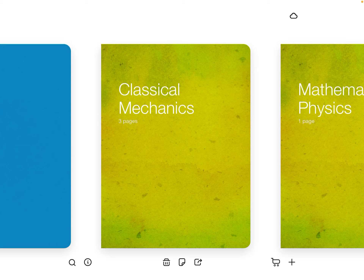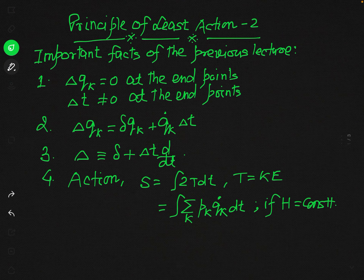Under variational principles, we are discussing the principle of least action. In the first lecture on this principle, you have been acquainted with the following facts: two things we have discussed - the meaning of action in mechanics, and another was capital Delta variation, which is actually different from the small delta variation. These are the important facts which we have already learnt in the previous lecture.